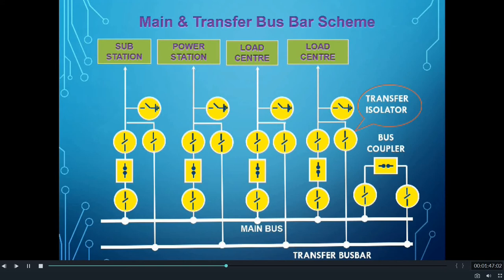The extra isolator used in the feeder for connecting to the transfer Busbar is known as the transfer isolator. Transfer isolators are connected in such a way that when a feeder enters the substation, it will face the transfer isolator first. In case of any fault or problem in the main switches of the feeder — that is, Line Isolator, Circuit Breaker, and Busbar Isolator — the feeder can be transferred to the transfer Busbar through this transfer isolator.